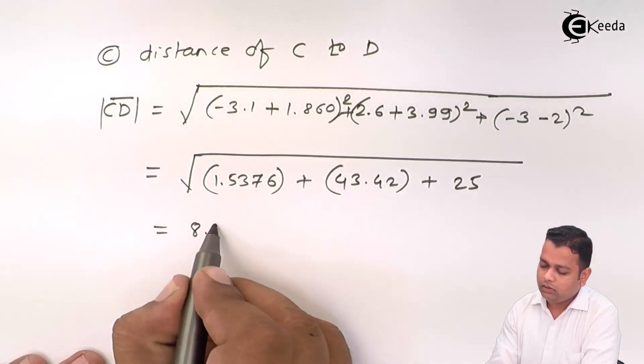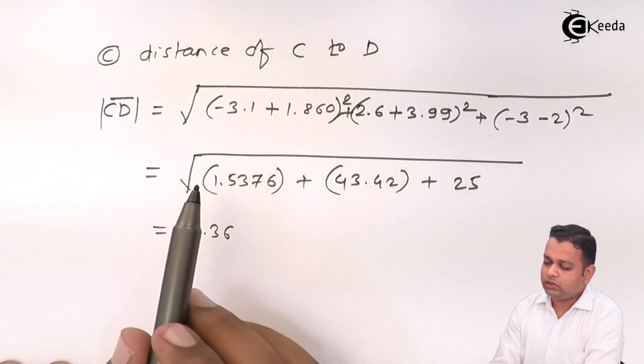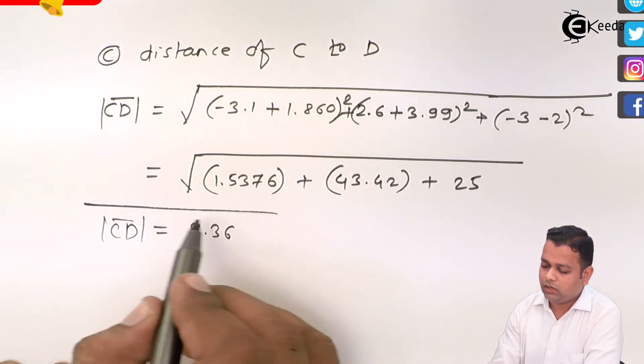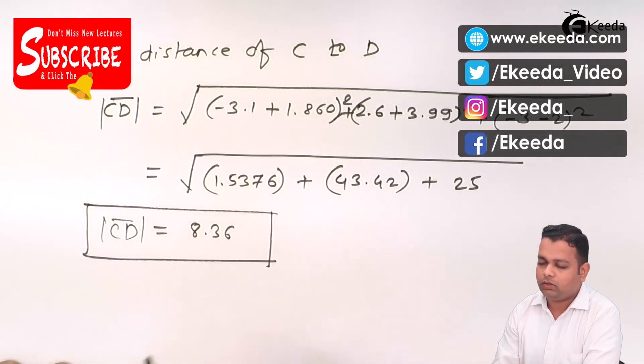we get the answer 8.36. So, distance from C to D, that is given by mod of CD bar is calculated equal to 8.36.